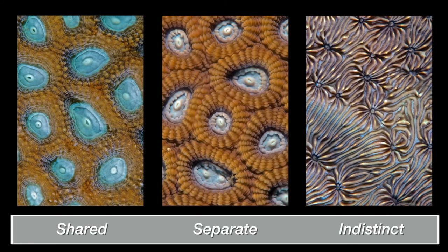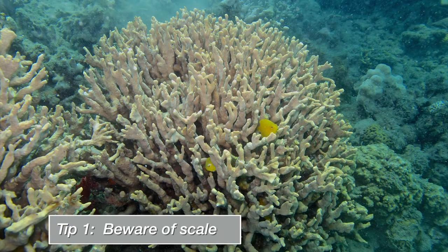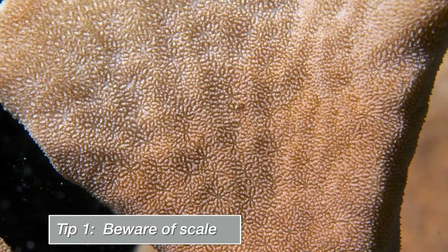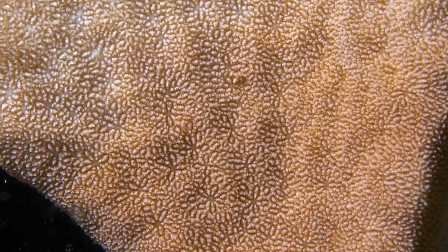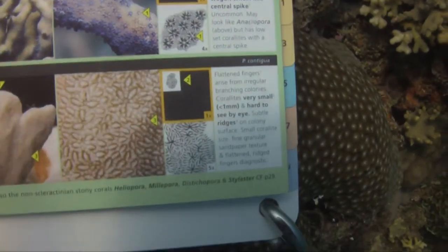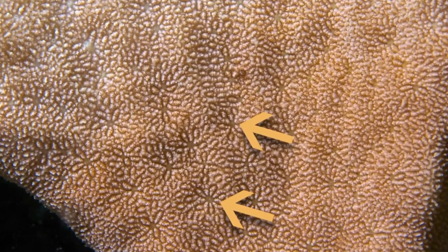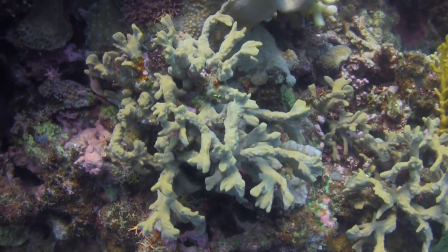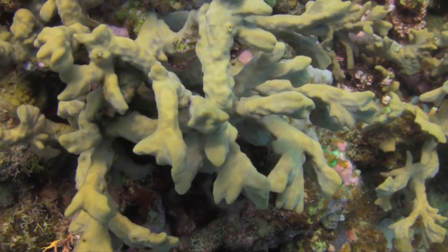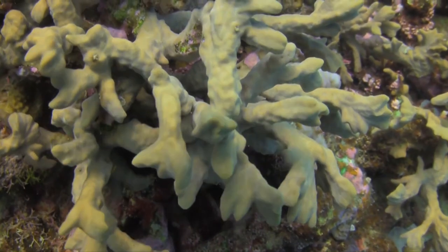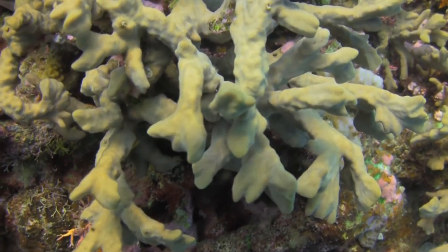This image shows us ideal examples of corals with shared, separate and indistinct walls. Tip number one is to be careful about the scale of corals. This branching coral has very small, less than one millimetre, coralites — that can be too small to see clearly underwater. A second problem with this coral is the fine, granular, sandy texture of these coralites, which makes it hard to see where the polyp mouths are. Corals with very small polyps and complex ornament are hard to understand underwater. In reality, there are very few corals like this, but they are common enough to cause problems. So the simplest solution is just to learn to recognise them. This one is called Samochora.